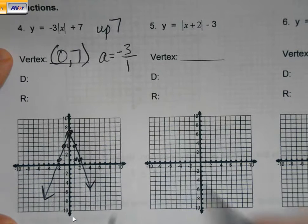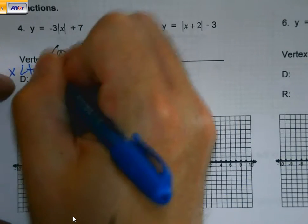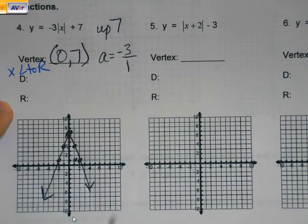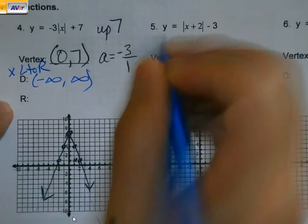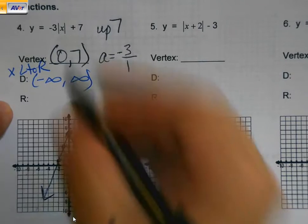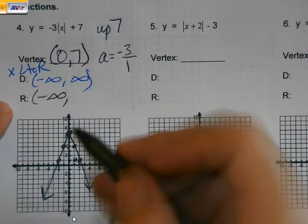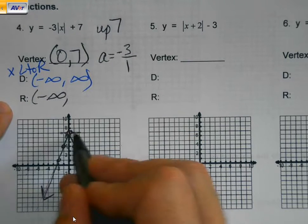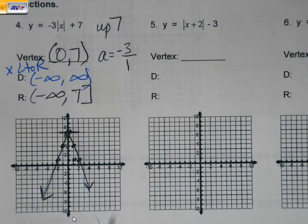I'm using this domain and range as a review. My domain, it's my x values from left to right. I've got an arrow going forever to the left and forever to the right. So my domain is negative infinity to infinity. My range. It does go down forever, so I'm with you on the negative infinity part. But it doesn't go up forever. It only goes up until I get to here, which is my y value of 7. And I've got my range.